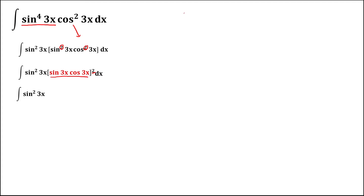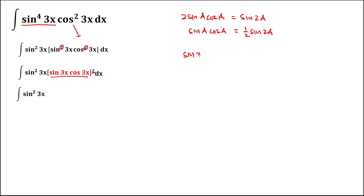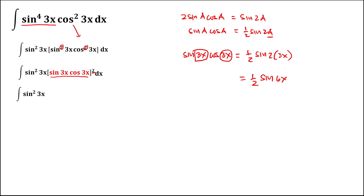Since 2·sin(a)·cos(a) = sin(2a), we have sin(a)·cos(a) = ½·sin(2a). So sin(3x)·cos(3x) = ½·sin(2·3x) = ½·sin(6x). This means the expression becomes (½·sin(6x)) to the power 2, times dx.